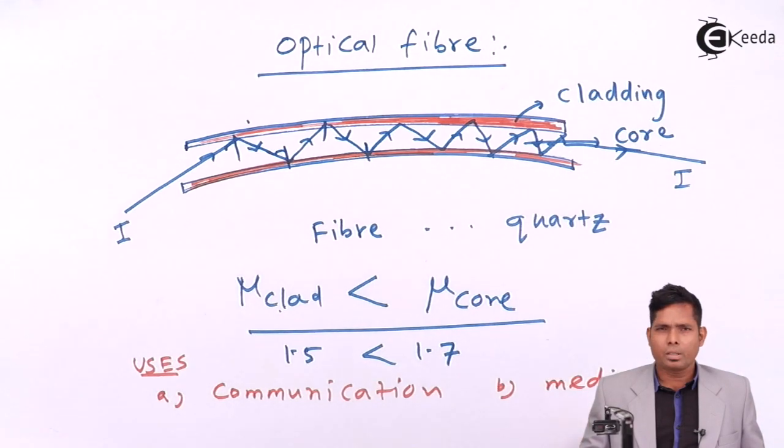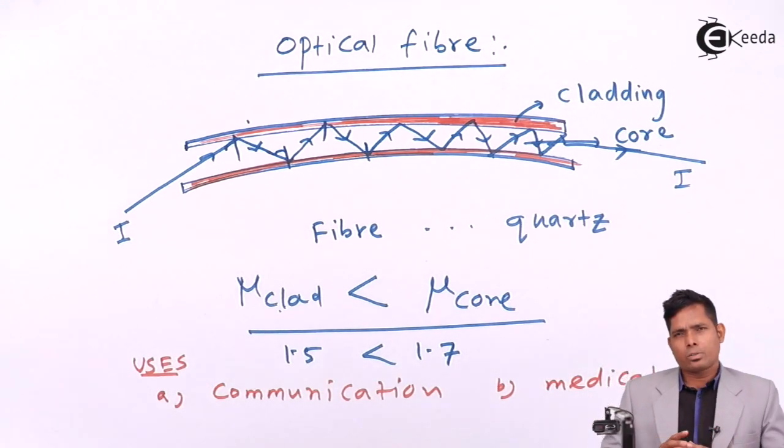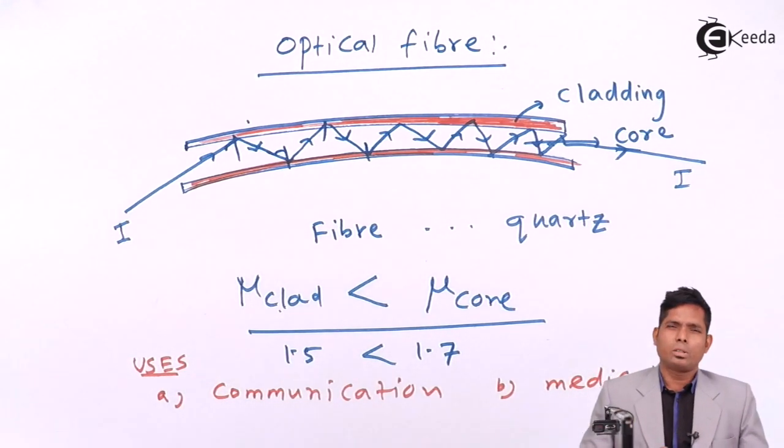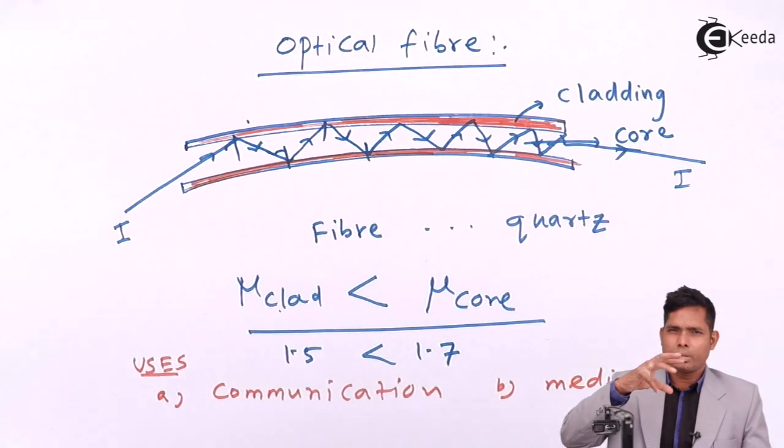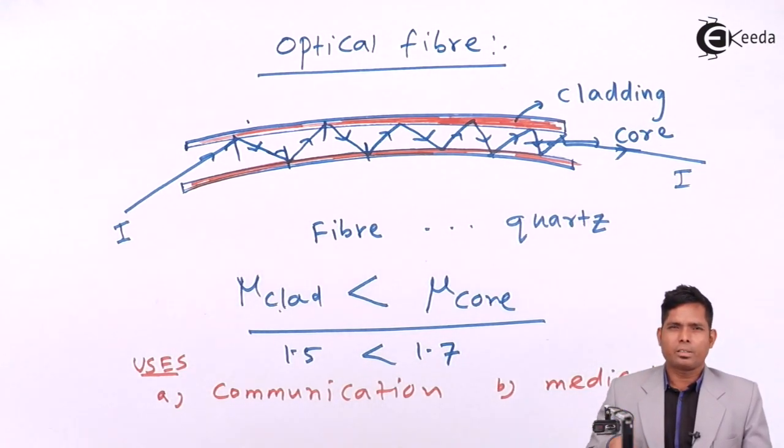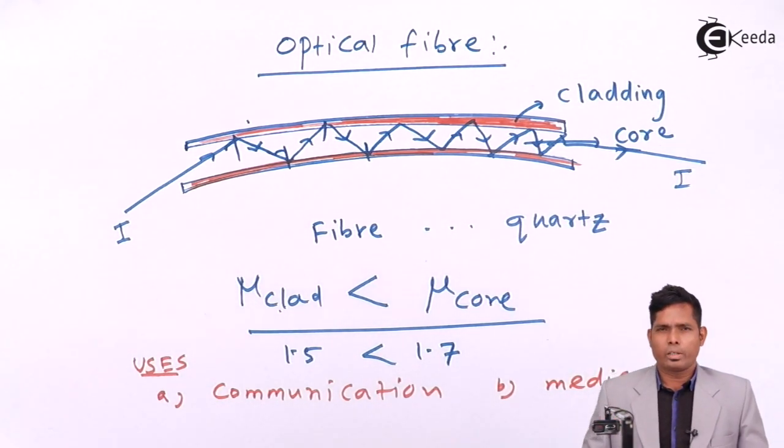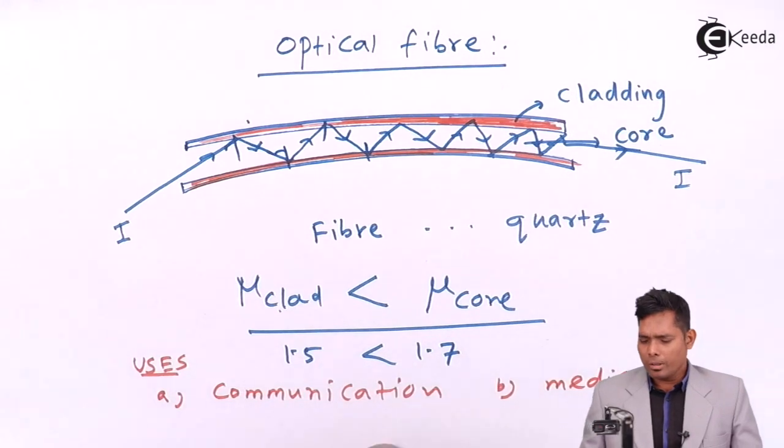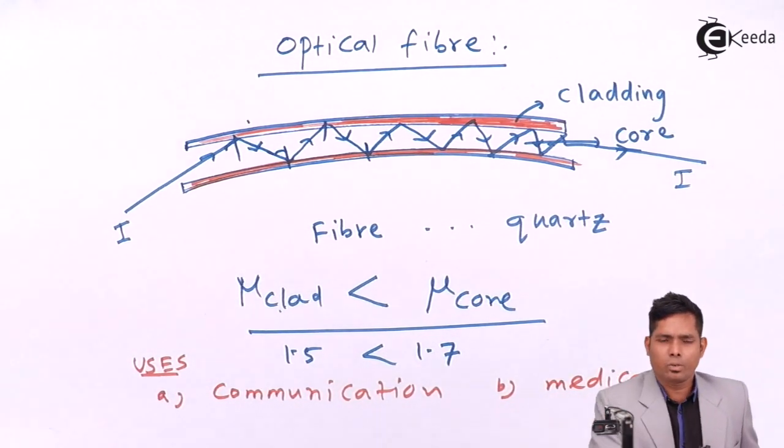And the medical use is endoscopy, where endoscopy is the instrument used to see the things inside the body. If you want to see something inside, the endoscope is used. It is allowed to enter into the body and you can see the picture and you can see the object which is inside. So to see inside parts we use that in medicine, in endoscopy.